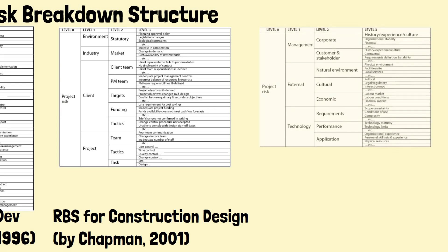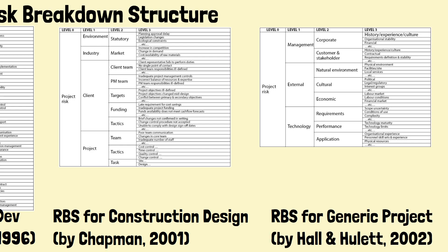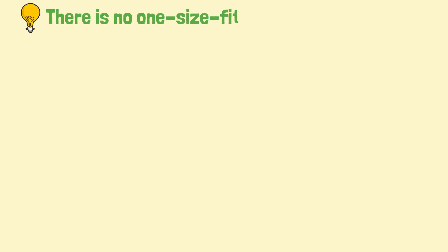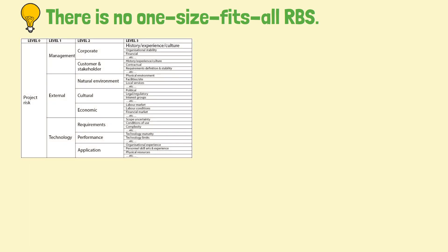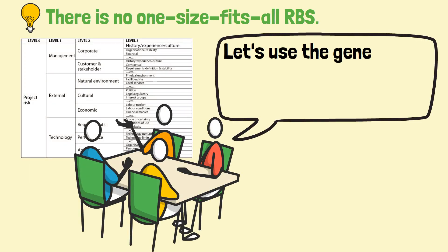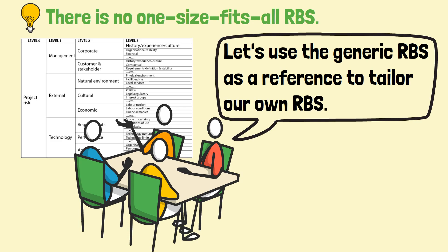There have also been efforts to create a generic RBS, which aims at producing a structured list of universal risk areas that might apply to any type of project in any sector, be it industrial, government, or commercial activity. However, it is impossible to have a one-size-fits-all structure, so it's essential for organizations to use the generic structure as a guide and develop their own RBS.